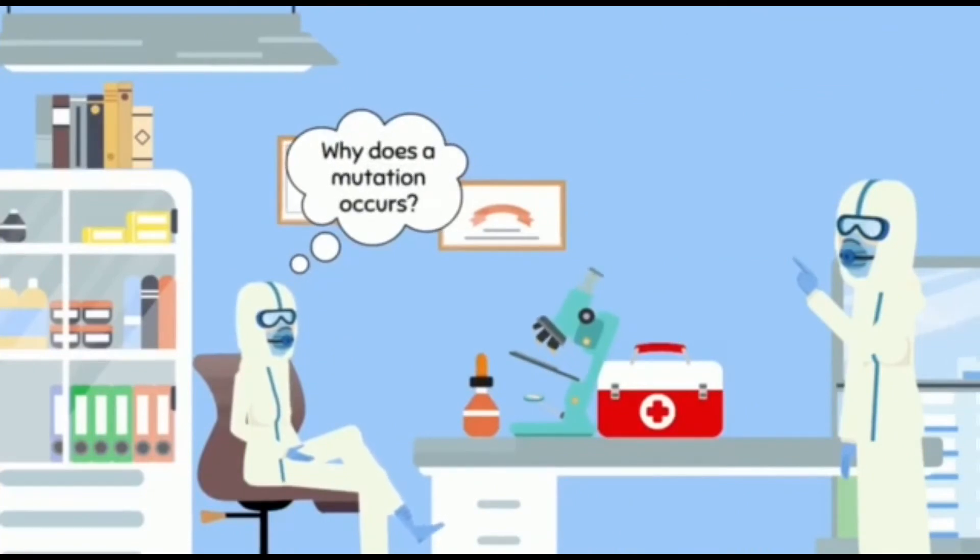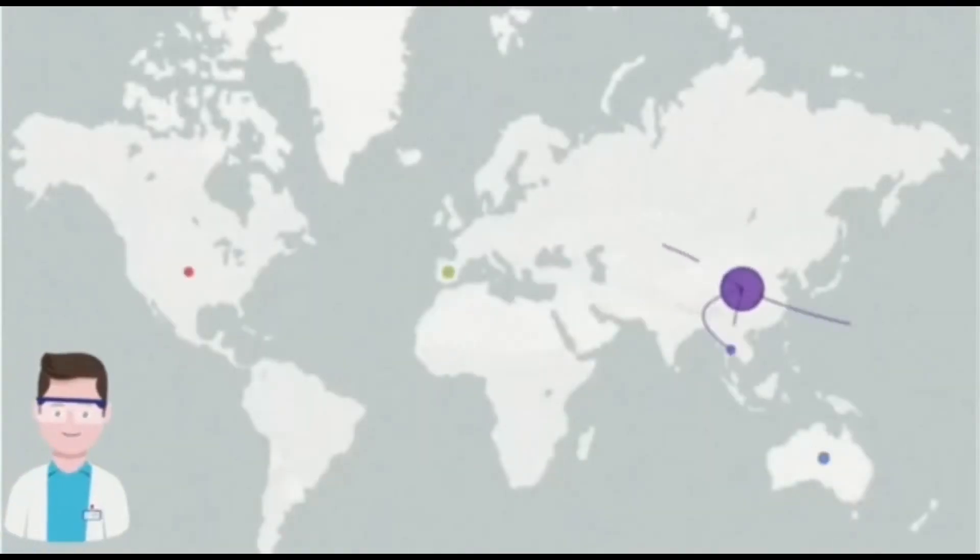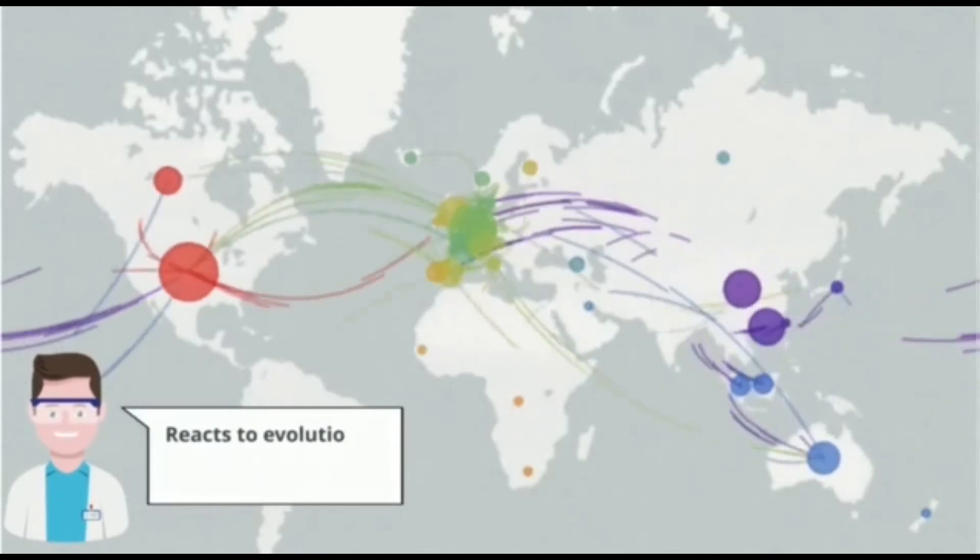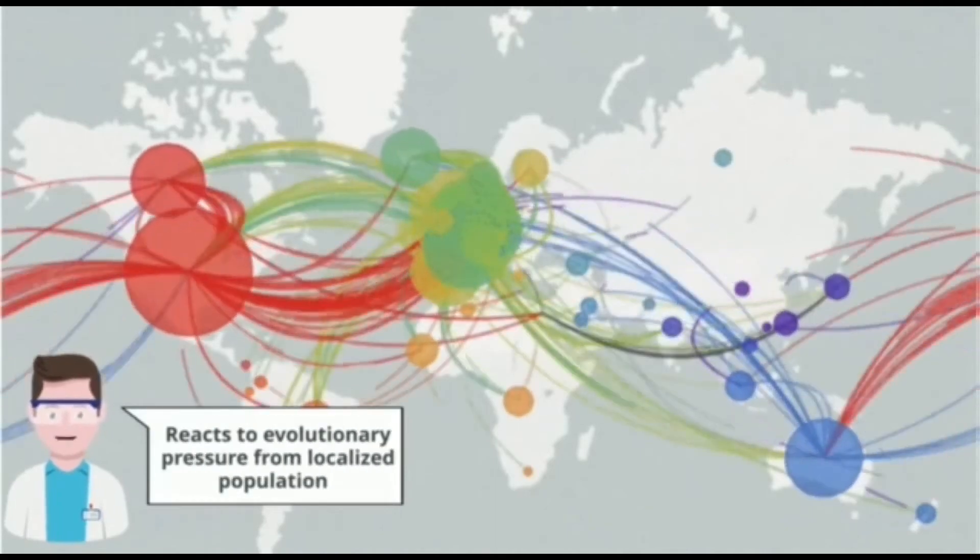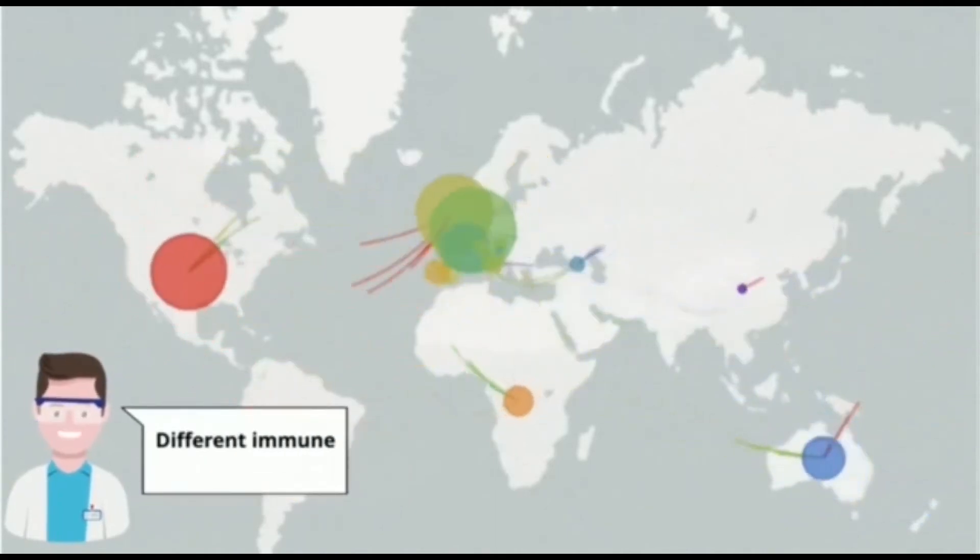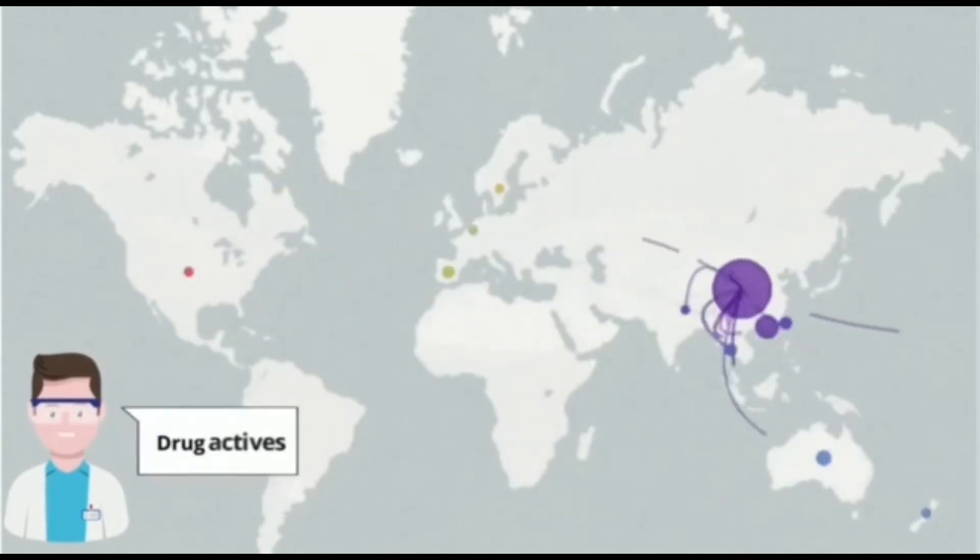Why does the mutation occur? Well, all viruses are mutating since it is a part of their natural life cycle. As the virus is being transmitted throughout the world, it can mutate as it reacts to evolutionary pressure from localized populations. This can be due to different immune responses or drug actives that are used against the virus.